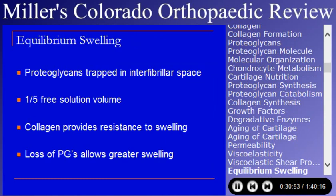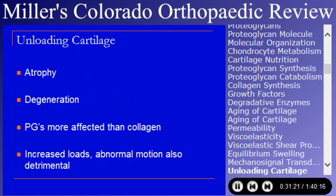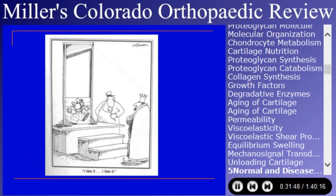Swelling occurs with loss of proteoglycans, so osteoarthritic cartilage is swollen with higher water content. Cartilage is aneural — it does not have a nerve supply. Monocytes and immunoglobulins are too big to penetrate it. It responds to loading, unloading, and biochemical and biomechanical changes. Unloading cartilage causes atrophy. Prolonged immobilization is bad for cartilage — proteoglycans are lost more rapidly than collagen. Abnormally increased loads and abnormal motion are also detrimental.